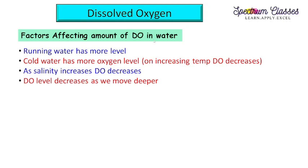Does the dissolved oxygen level vary from place to place, and if so, what are the factors which affect it? Dissolved oxygen level varies from point to point. Running water has more dissolved oxygen compared to stagnant water. Cold water has more oxygen than hot water — as temperature increases, dissolved oxygen decreases. As salinity increases, dissolved oxygen decreases. Also, dissolved oxygen level decreases as we move deeper into the aquatic body.